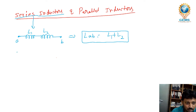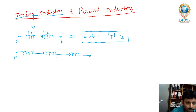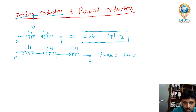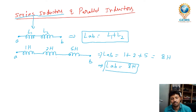If there are three inductors — for example, 1 Henry, 2 Henry, and 5 Henry — the total LAB equals 1 plus 2 plus 5, which is 8 Henry. Never forget to mention units; we must know what the values represent. The total is 8 Henry.